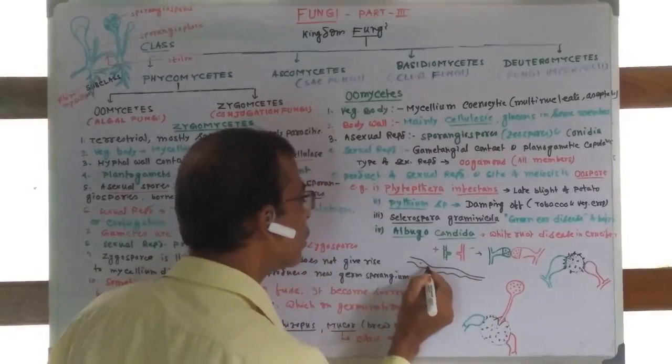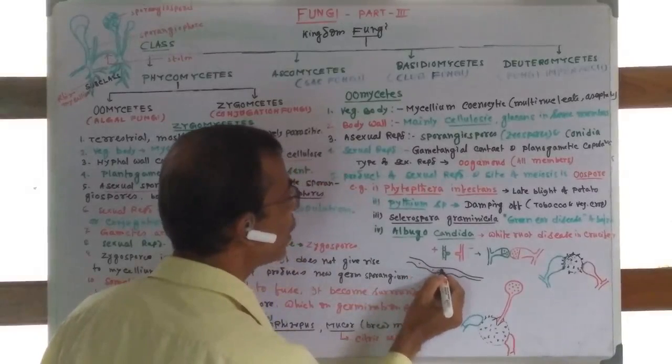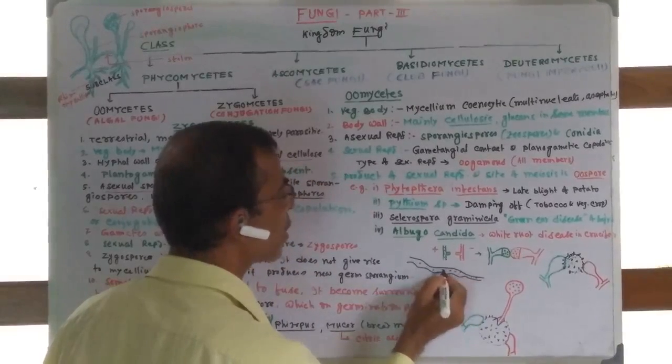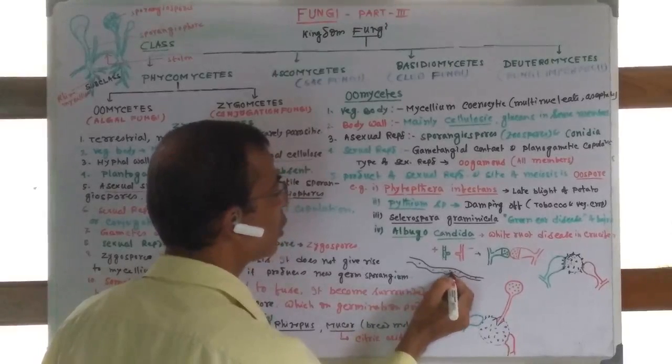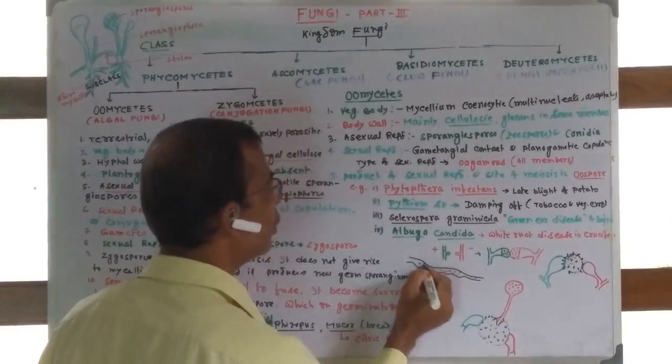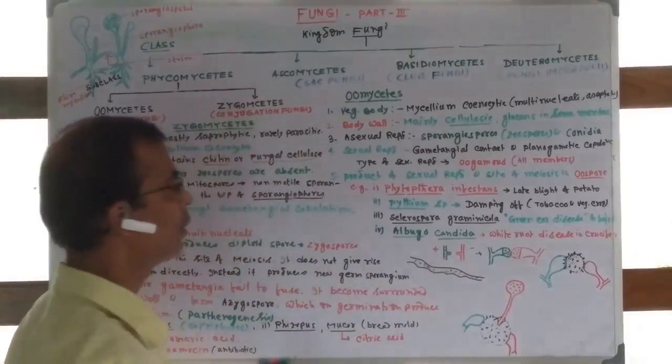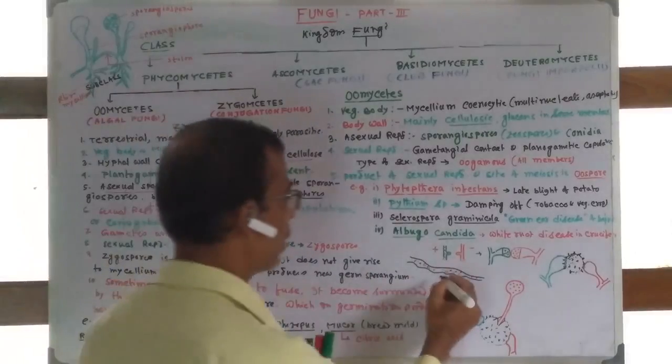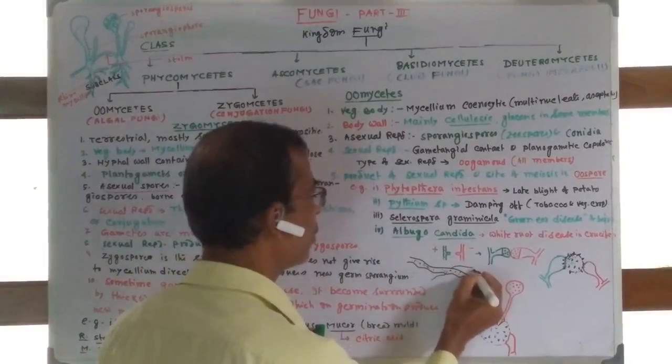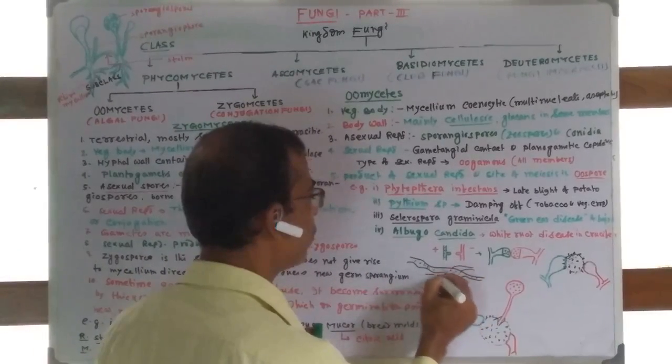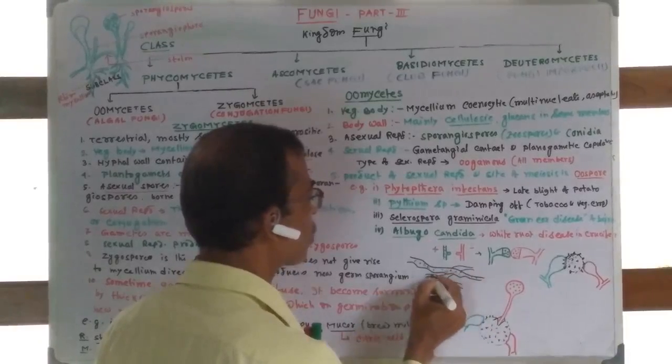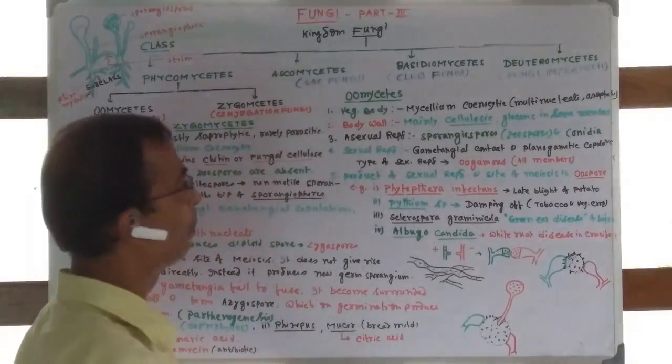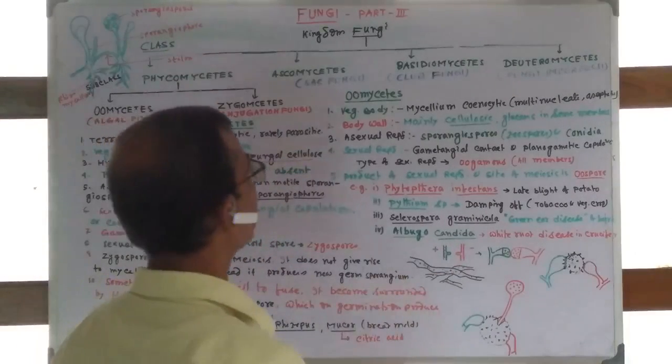The mycelium possesses numerous nuclei and vacuoles with dense cytoplasm. These are called coenocytic hyphae. When coenocytic hyphae crisscross one over the other, they form a network-like structure called coenocytic mycelium.